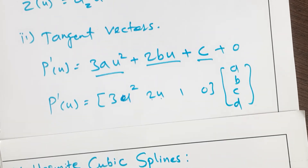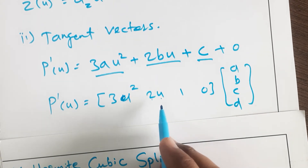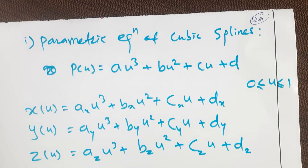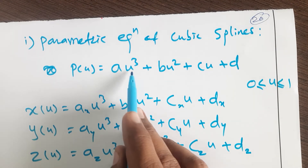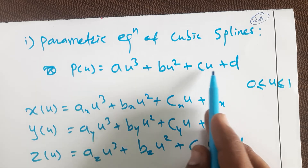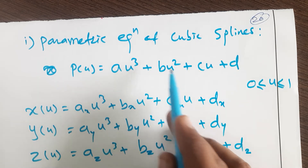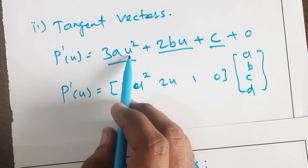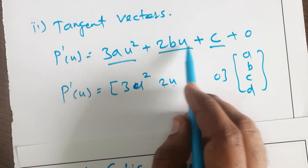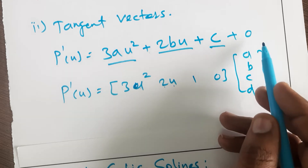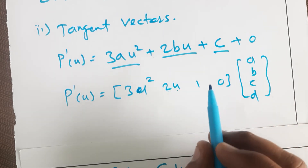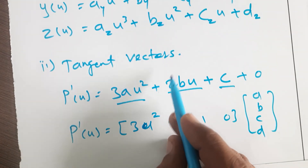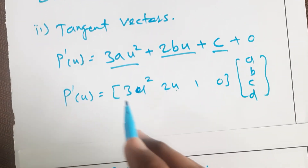As we have seen the parametric equations here: p(u) = au³ + bu² + cu + d, where u is a parameter. And p'(u) = 3au² + 2bu + c. This is the parametric equation, and this is the tangent vector of the Hermite cubic spline.